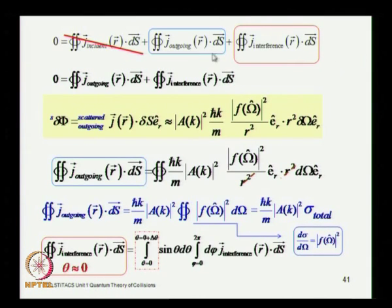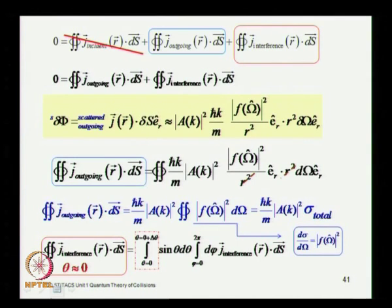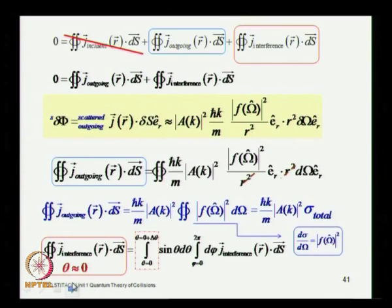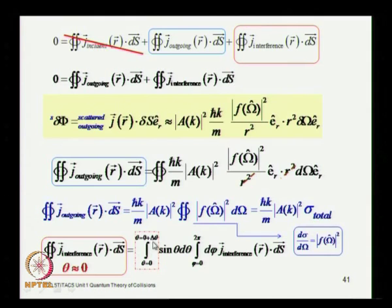Now we need to consider the interference term. This integration is over all angles, but we have already discovered that the only angles of importance for the interference term are those small angles in the neighborhood of θ = 0, because other angles make no meaningful contribution.